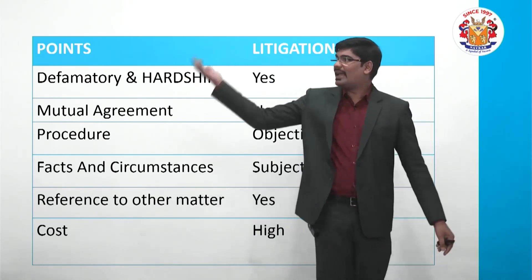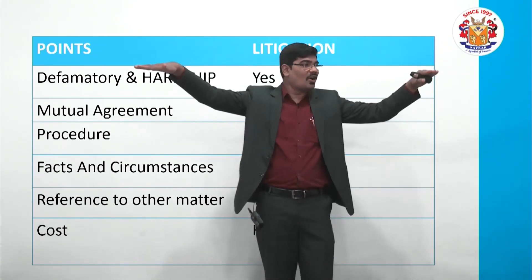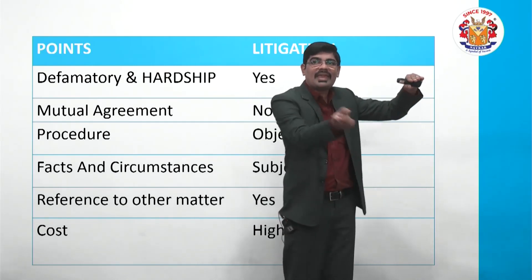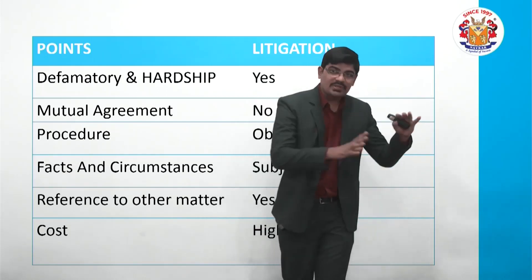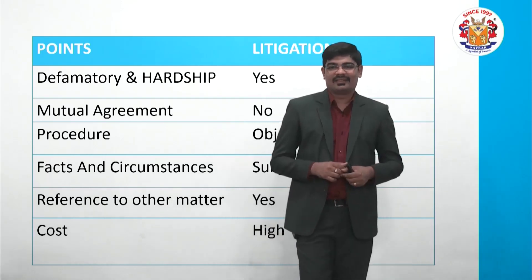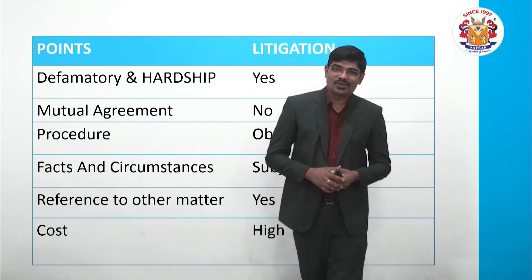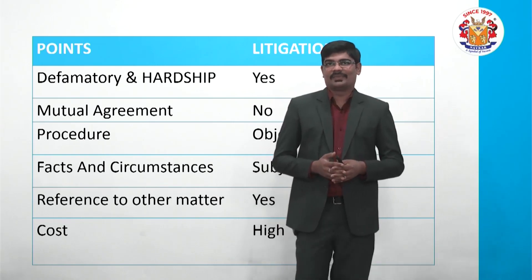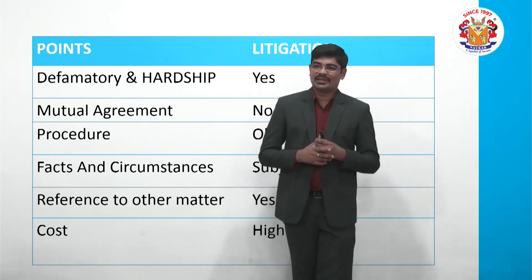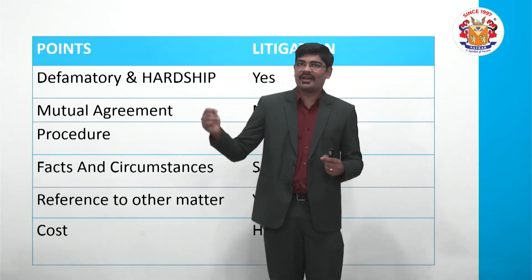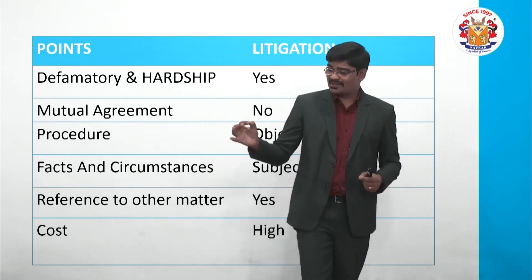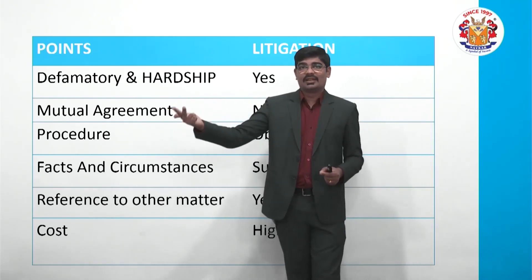So we have seen two paths: one is litigation, and the second is the Alternate Dispute Resolution Mechanism. Under ADR, the four commonly used methods are: first, Negotiation; second, Mediation; third, Arbitration; and fourth, Conciliation. Among these four, the most frequently used ADR methods are Arbitration and Conciliation.